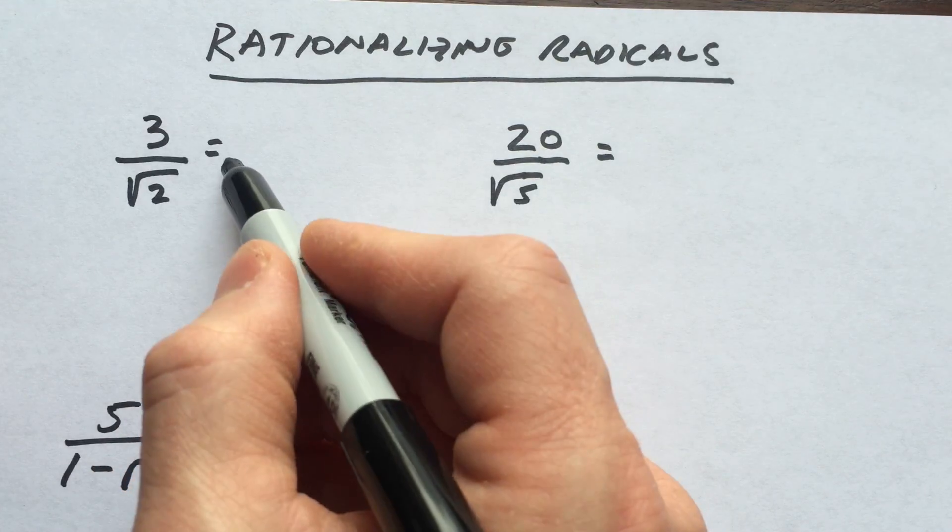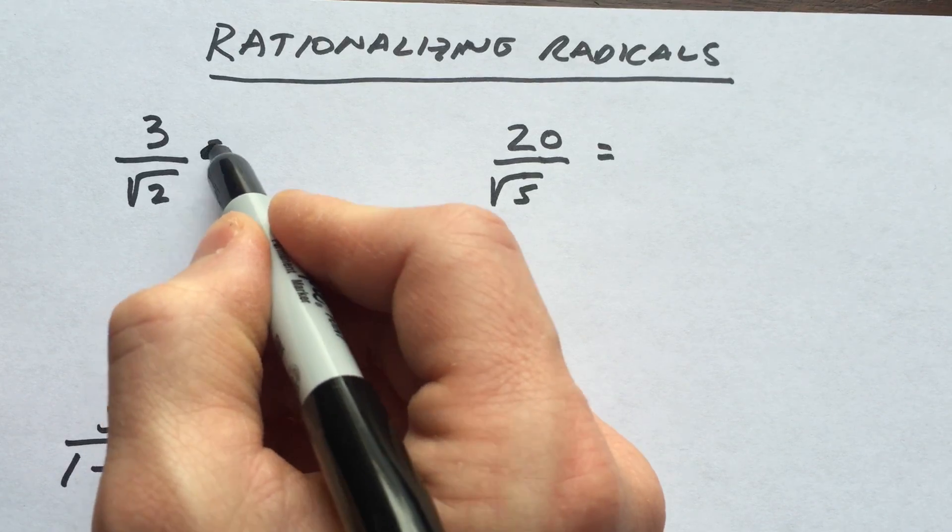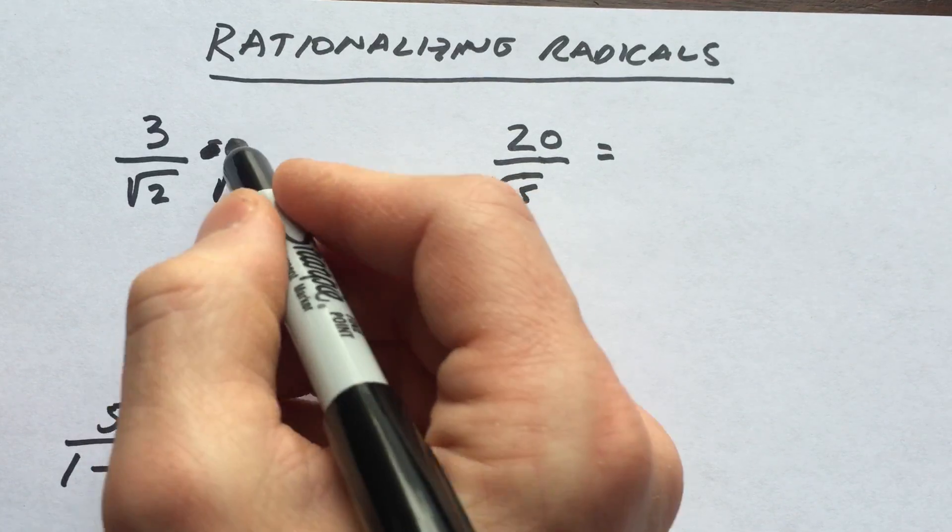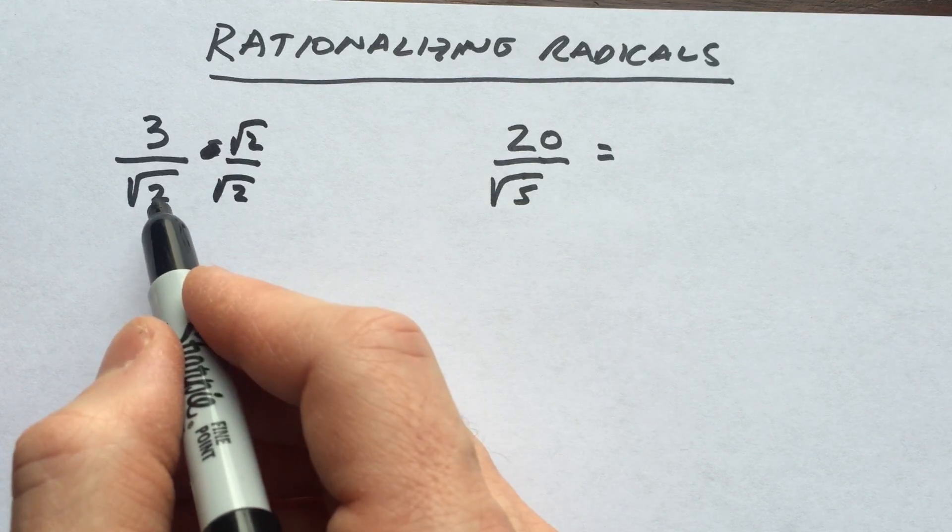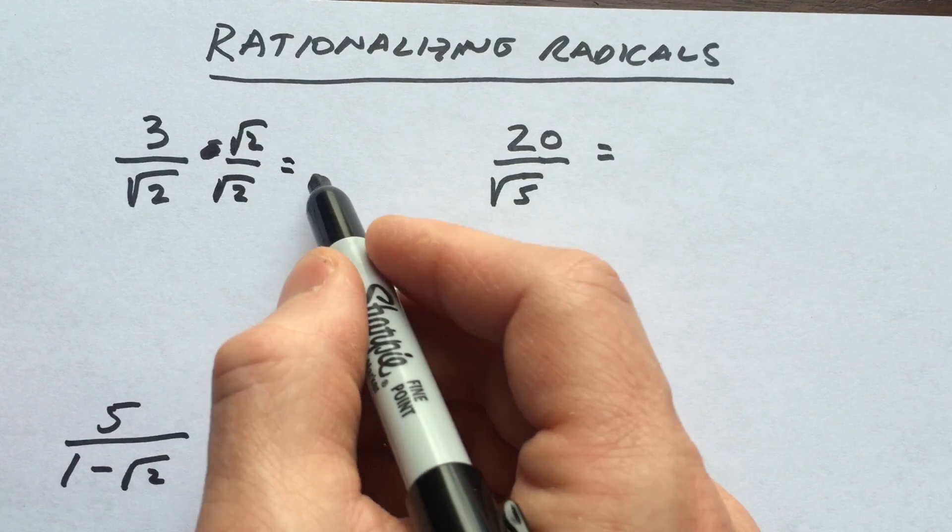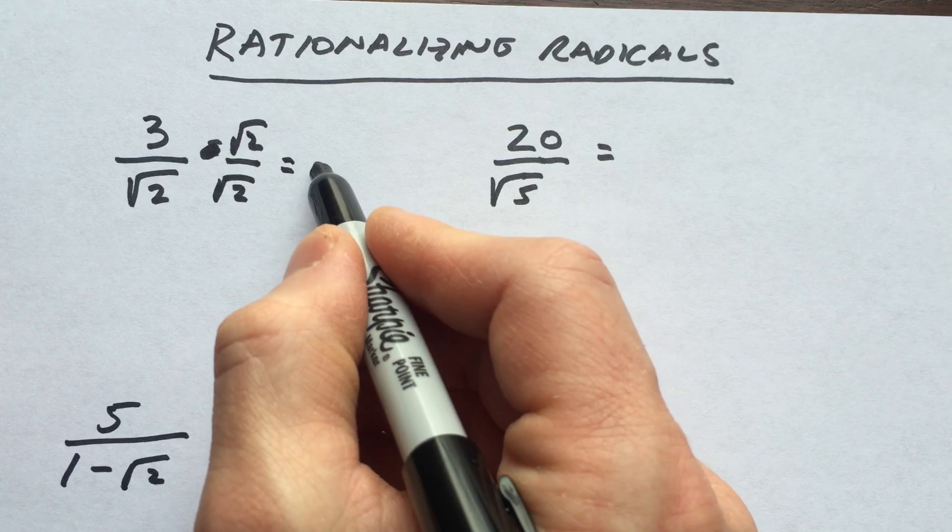So what we're going to do is multiply by the square root of 2 to the numerator and denominator. Square root of 2 times square root of 2 gives us square root of 4, which equals 2.